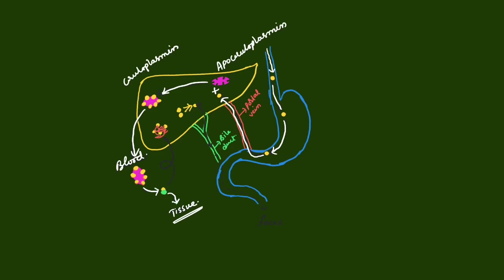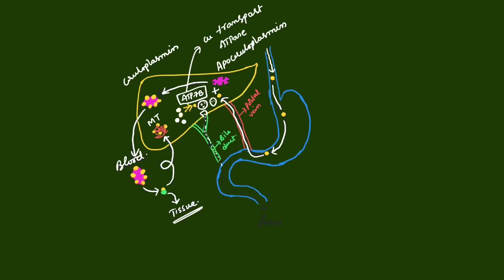Copper is very essential to our body. Free copper and ceruloplasmin are also taken up by the liver, and some copper is trapped inside hepatocytes in metallothioneins. Excess free copper, with the help of the ATP7B gene product — copper transporting ATPase — is incorporated into vesicles, which are later exocytosed into the biliary canaliculi. Excess copper is thus excreted into the bile, which later reaches the intestine and is excreted in feces. This is how copper balance is maintained in our body.